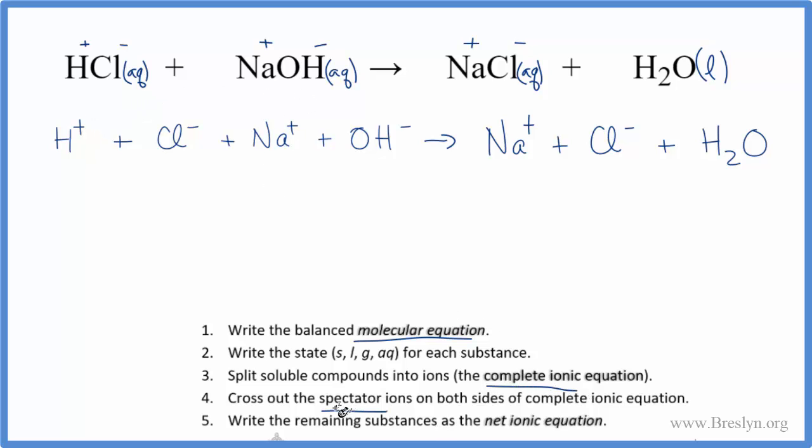Next we can cross out spectator ions. These are the ions that appear on both sides of the equation. I can see the Cl here, I have it here and here, let's cross it out. It's the same, it hasn't changed. I have Na plus, Na plus, still the same, it hasn't changed, really nothing's happened so let's get rid of that. That leaves us with our net ionic equation.